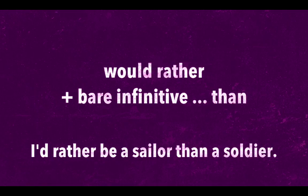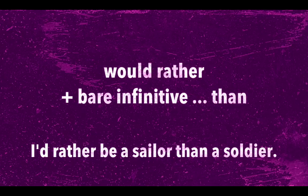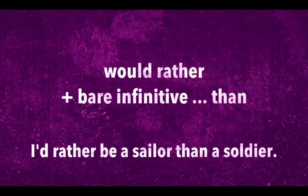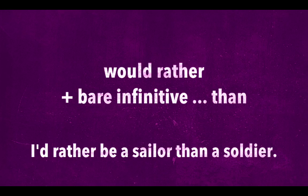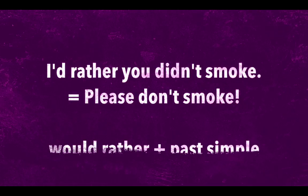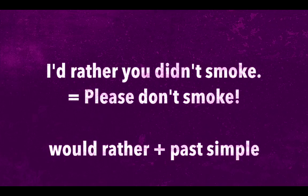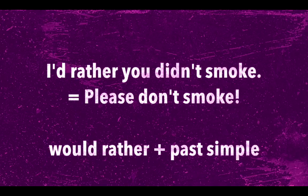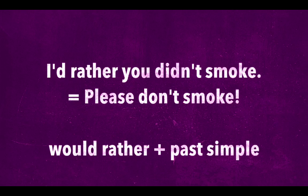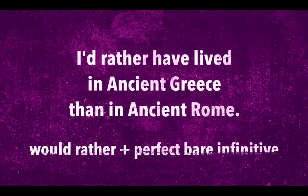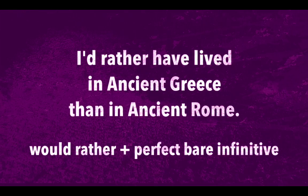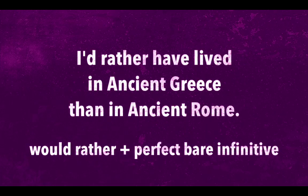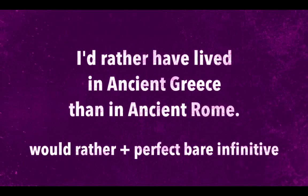Use 'would rather' to talk about preference about present actions — in this case, we're talking about real, concrete situations. Use 'would rather' with past simple to talk about imaginary preferences in the present. You can also use 'would rather' to imagine situations about the past, just like the third conditional. In that case, you'll use a perfect structure instead.